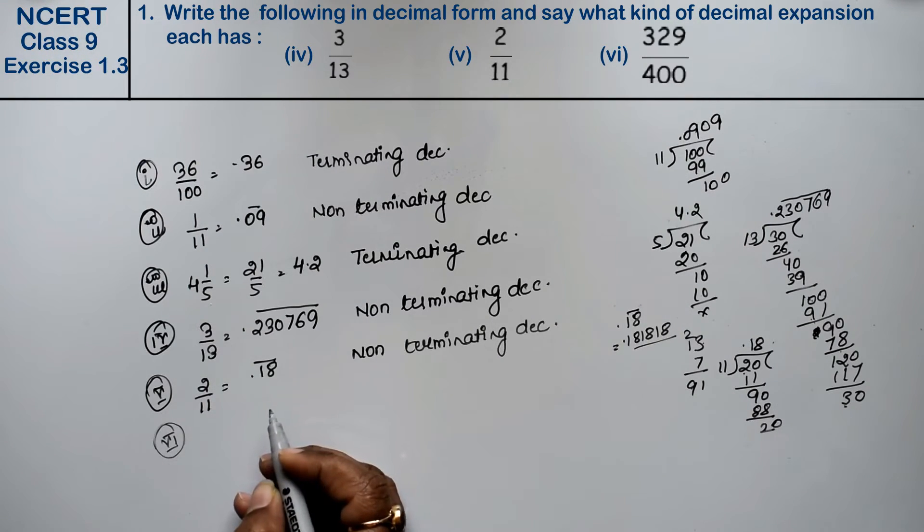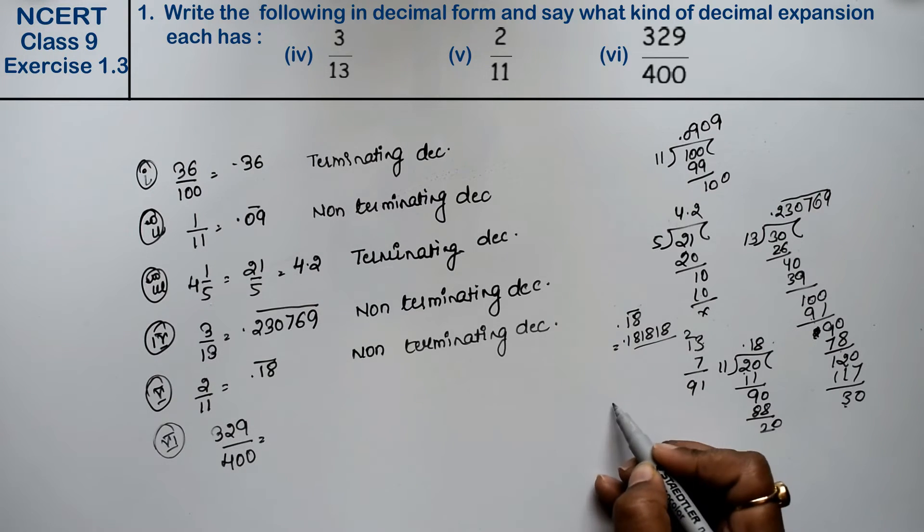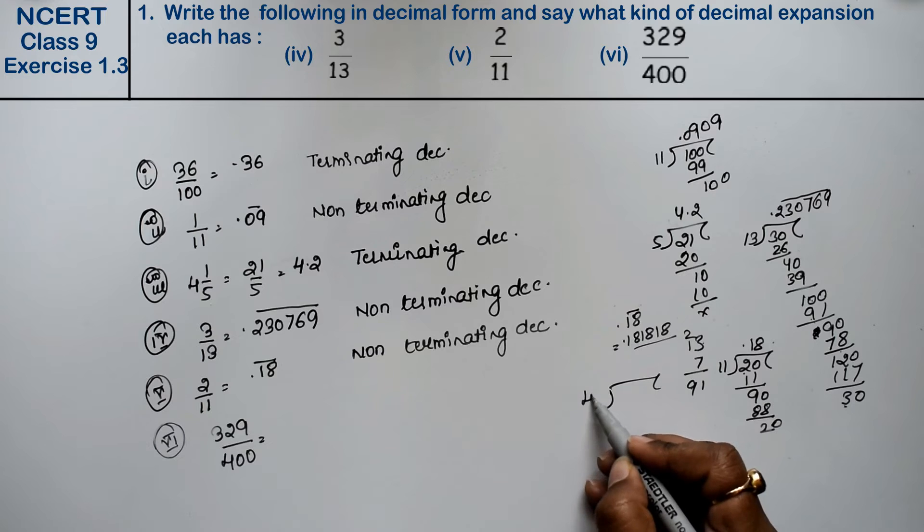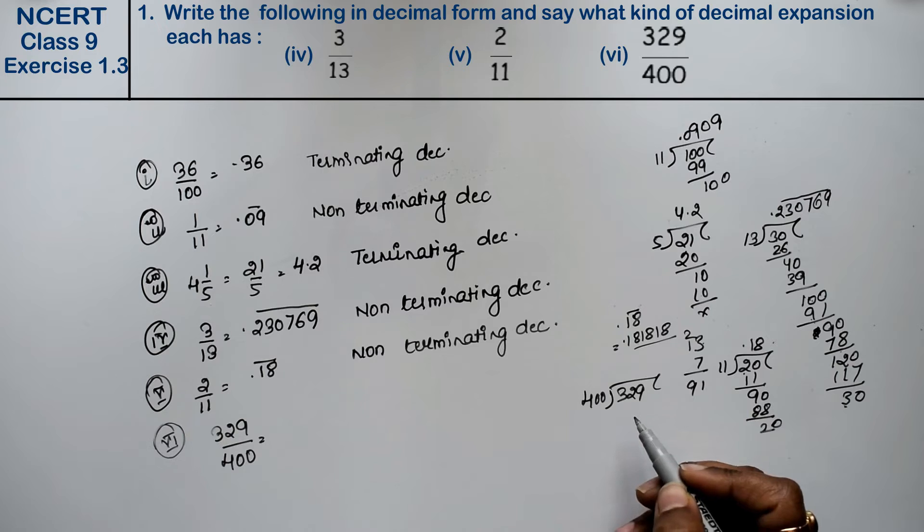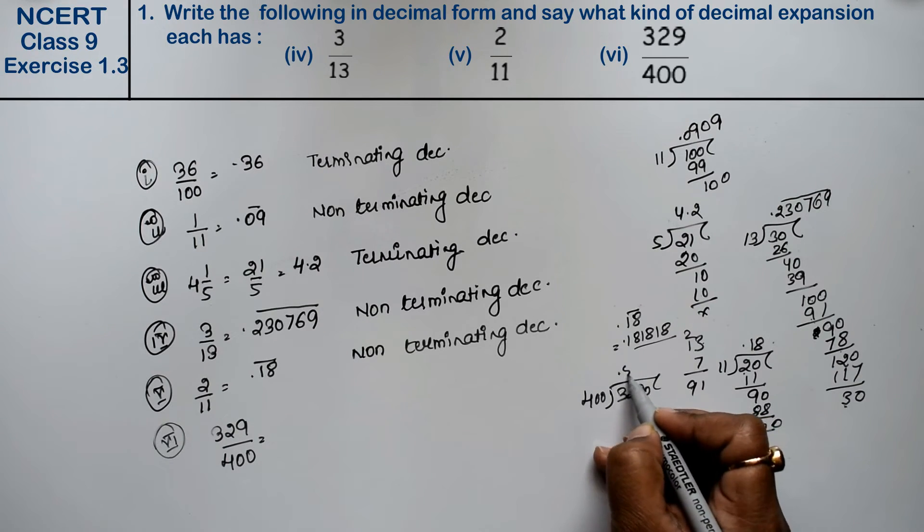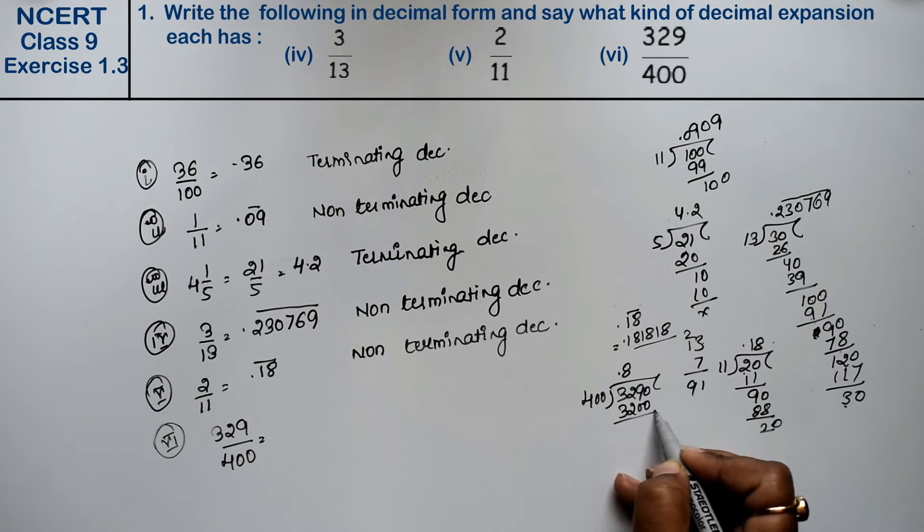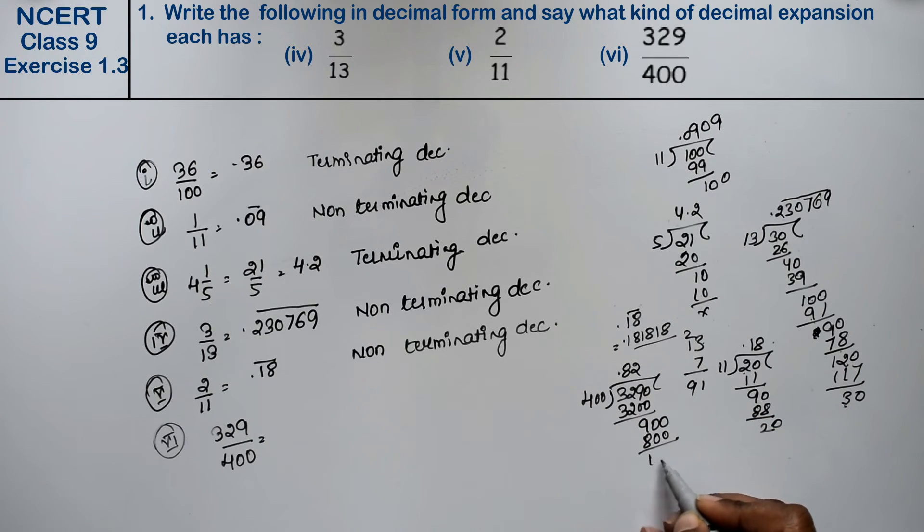Let's do sixth part. Sixth part is 329 upon 400. So let's divide 400 from 329. Right friends? Now point is 0. 4 eights are 32. Right? So we divide by 90, zero automatically. 4 twos are 8. Right? 100. One zero automatically. 4 twos are 8.